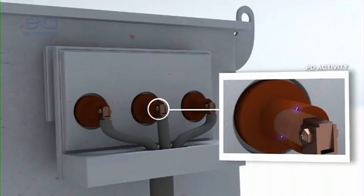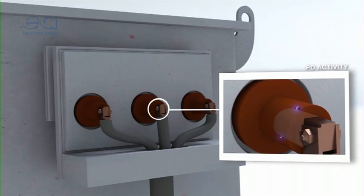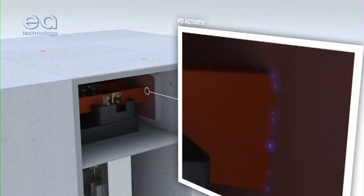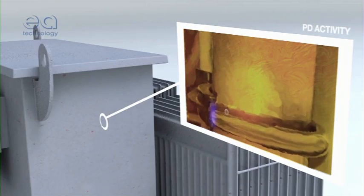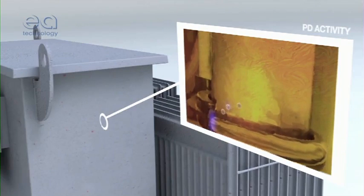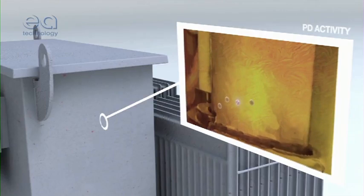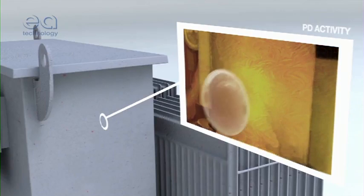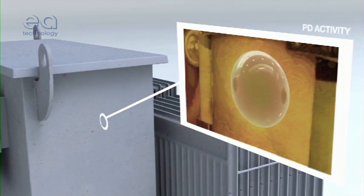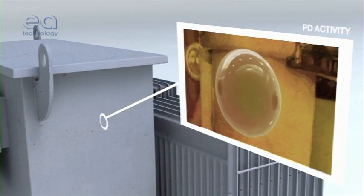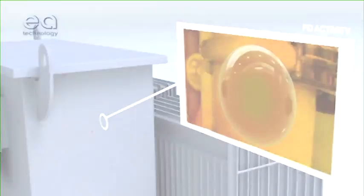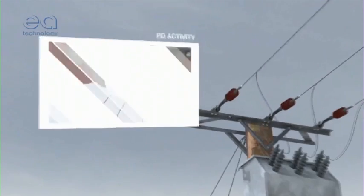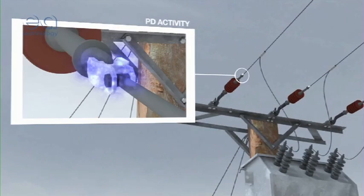It can occur in voids within solid insulation, across the surface of insulating material, within gas bubbles in liquid insulation, or around an electrode in gas in the form of corona.